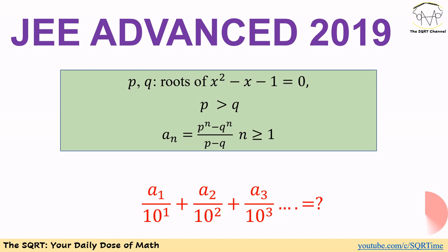With this general term we are going to find a_1 over 10 to the power of 1, plus a_2 over 10 to the power of 2, plus a_3 over 10 to the power of 3, and so on. Before moving forward to the solution, make sure that you pause the video to think about this problem.